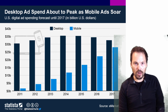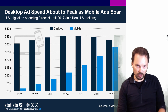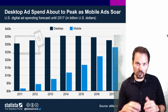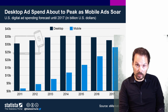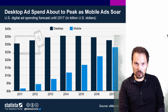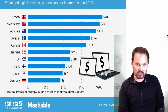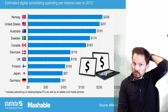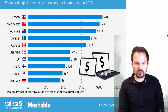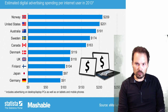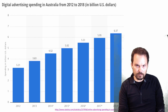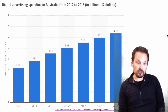The growth in online spending is coming particularly through mobile, which as I've spoken about in another video has very quickly become the preferred device for accessing the internet. Looking at estimated ad spending per internet user, Australia is among the highest in the world — we are at the forefront in terms of spending on digital, and this shows the growth of the digital spend in Australia.